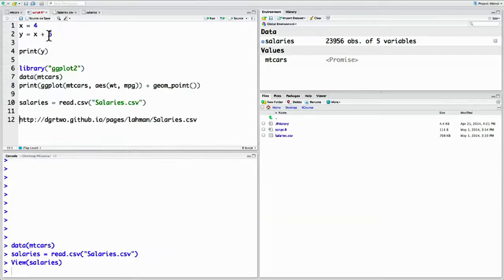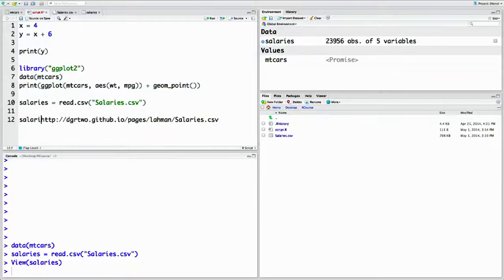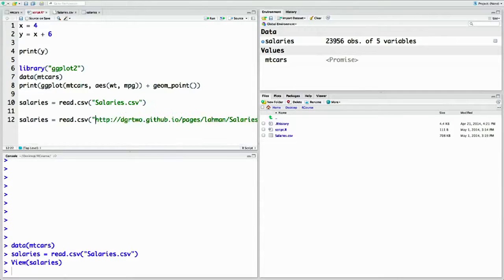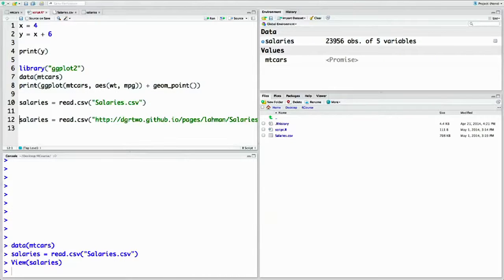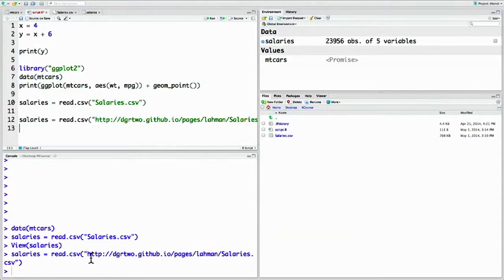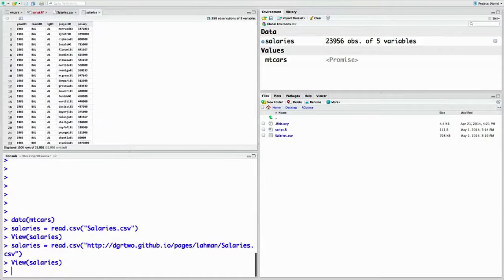I had you download the file just so we could look at it but note that you don't actually have to download it at all. R can read a csv file directly from the internet if you give it the url. So take that url we had here and say salaries equals read dot csv and then in quotes the url. Now run just this line. When it downloaded the file, read it in and still saved it into the same data frame.